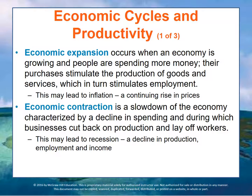Economic contraction is when things slow down — we call these recessions. It's a slowdown characterized by a decline in spending: people start to spend less, or businesses produce less and start laying off workers. Technically, a recession is two consecutive quarters of declining gross domestic product. Decline in production, employment, and income are all characteristics of a recession.